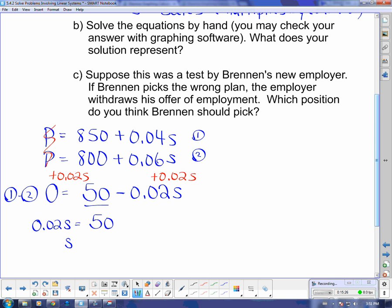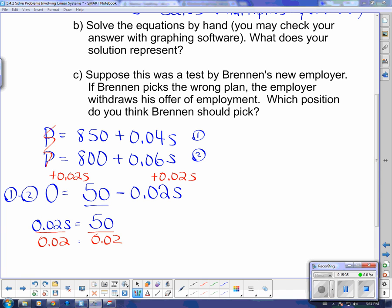And now when I divide both sides by 0.02, I get S is equal to $2,500.